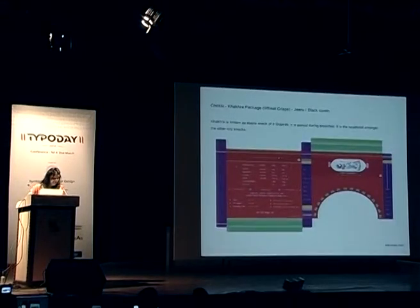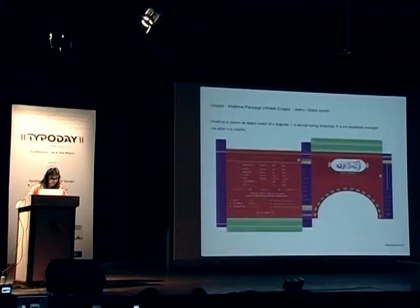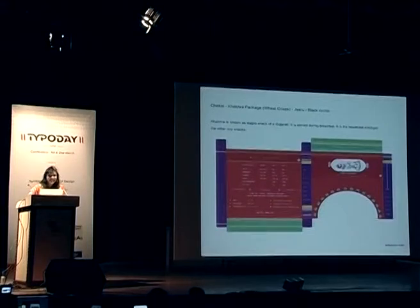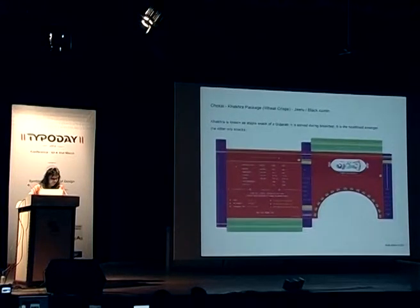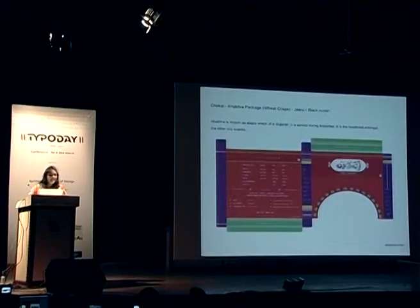The two flavours included Jiru Khakara and Sada Khakara. Jiru refers to black cumin seeds, and Sada is the plain flavour.